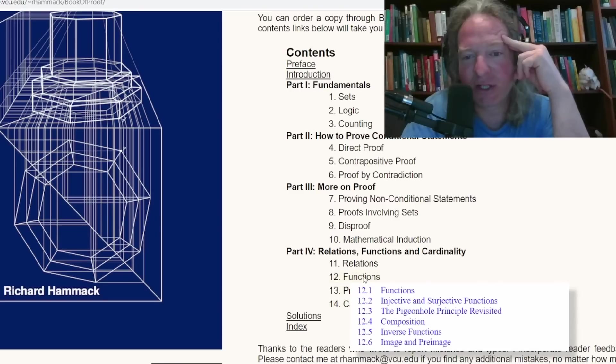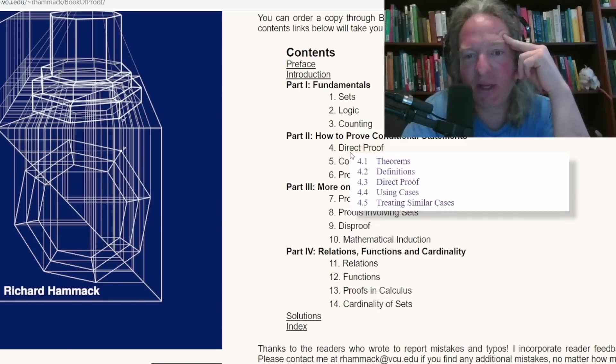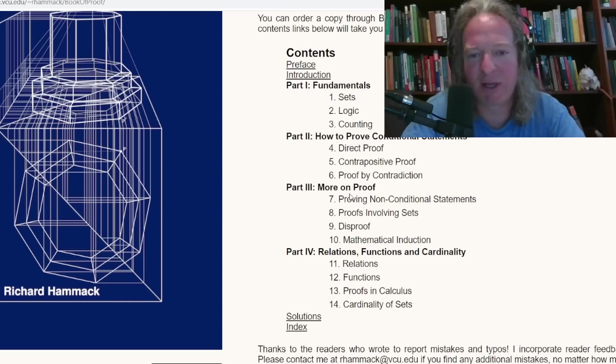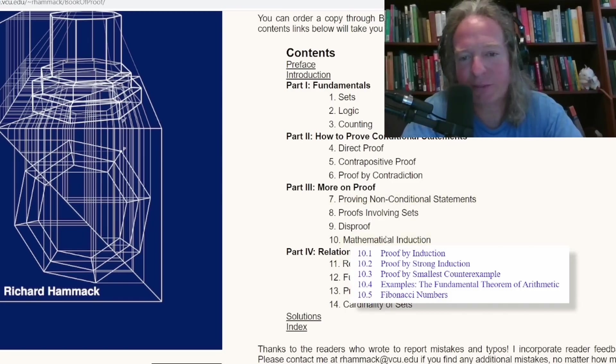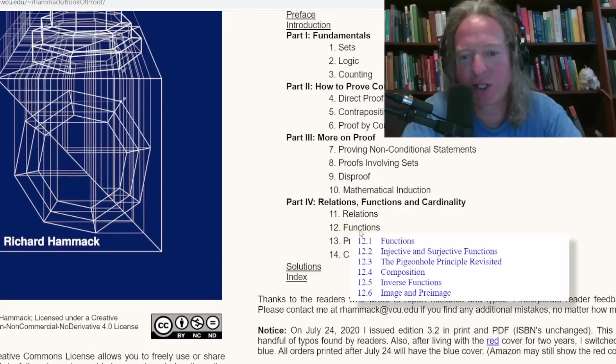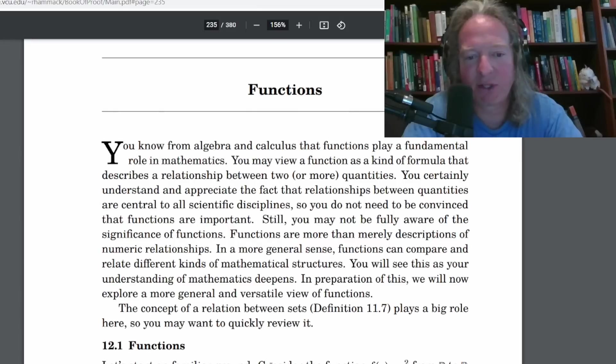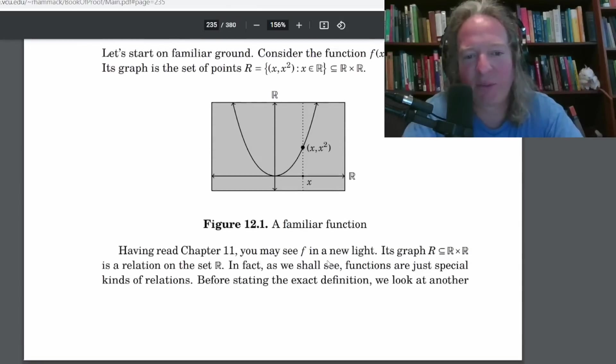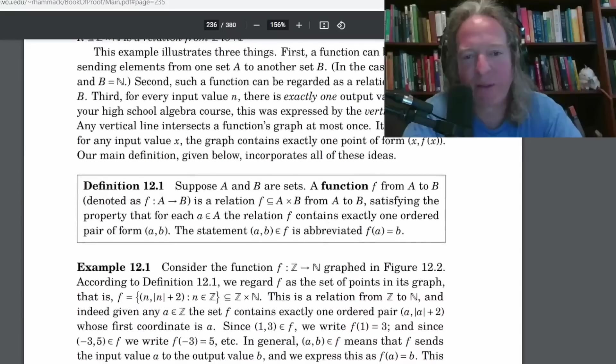And there's cardinality of sets functions. Let's look at functions. Let's go to injective and surjective functions. Let's look at that or you can see it here. So let's see if he has some examples. Here he defines a function from A to B as a relation from A to B satisfying the property that for each A in A, the relation F contains exactly one ordered pair. So here he defines a function and he does it in a good way. He defines a function as a relation with a special property. And he describes that special property here. So that's good.